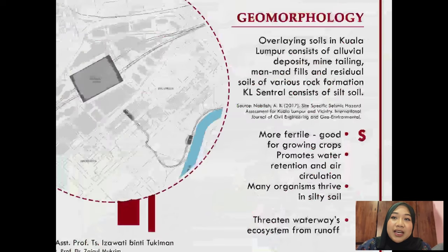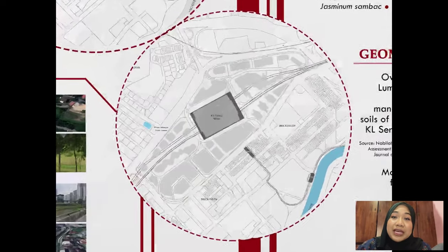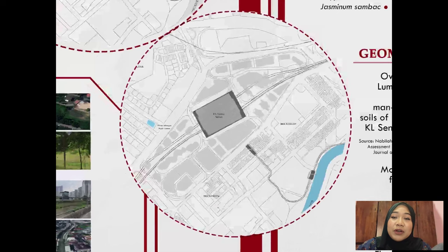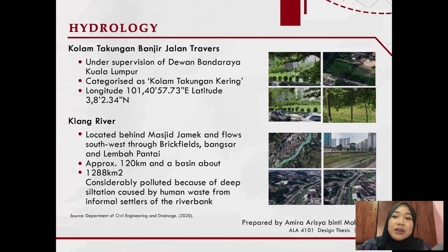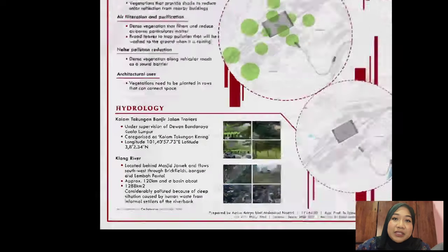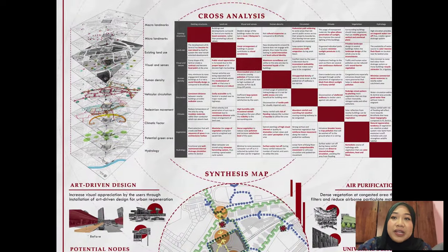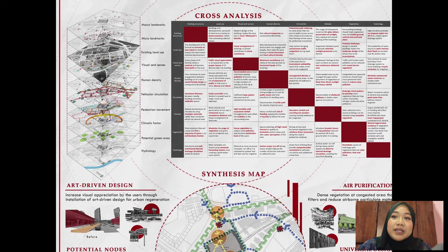Last but not least, there are two main water catchment areas for KL Central which are Kolam Takungan Banjir Jalan Traverse and Klang River. Kolam Takungan Banjir is a dry water catchment that is not as big as Klang River. However, Klang River is more polluted because of deep siltation caused by human waste from informal settlers of the riverbank. Based on these findings, I came up with a layering map with cross-analysis table that further describes the interrelation of each element.